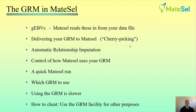We're going to be talking about delivering your GRM to MateCell with the cherry picking approach we introduced a few years ago. Then we'll talk about automatic imputation of relationships where you've got missing information, control on how to use your GRM in MateCell, a quick demonstration run, which GRM you should use, why using the GRM is slower than using the NRM, and finally using the GRM facility for other purposes.